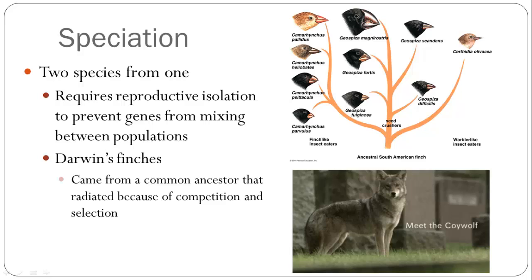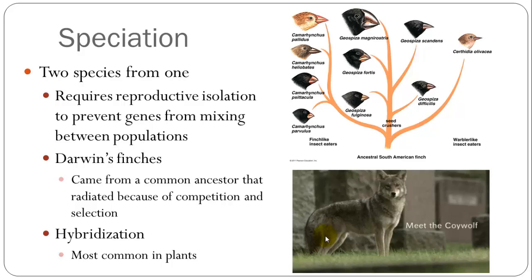Sometimes speciation can also occur through hybridization, which is most common in plants. Interestingly, the coyote and the wolf can actually form fertile hybrids. This happened for a population now in the northeastern United States — as coyotes moved more and more east, especially along the northern border where wolves still existed in Canada, some coyotes hybridized with wolves. Now these northeastern coyotes have a lot of wolf genes, making them a little bit larger. We may have the hybridization of a new type of species, maybe called the coywolf.